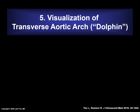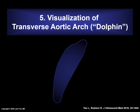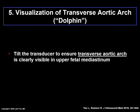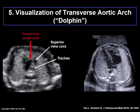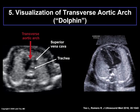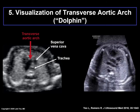Another recommendation when performing the FINE method is to visualize the transverse aortic arch, or what we call the dolphin. After an appropriate apical four-chamber view has been obtained, the transducer should be tilted slightly to ensure that the transverse aortic arch — or dolphin — is clearly visible in the upper fetal mediastinum. Confirming visibility maximizes the chances that it will be discernible within the STIC volume analyzed by FINE. The transverse aortic arch looks like the back of a dolphin, along with the cross-section of the superior vena cava and trachea.